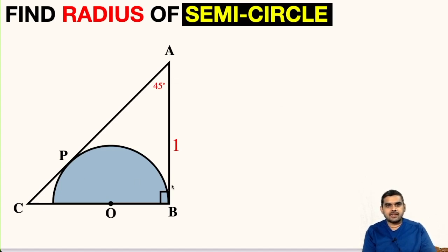So in this question, we have a right triangle and inside it we have a semicircle. We have to find the radius of this semicircle and the things that are given to us is angle A is 45 degrees and the measure of side AB is one unit.